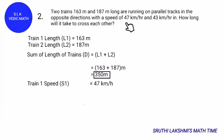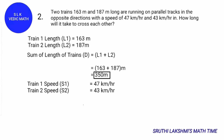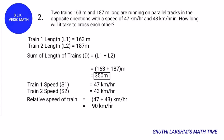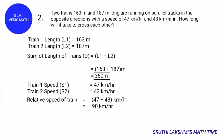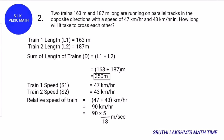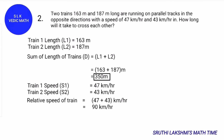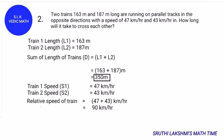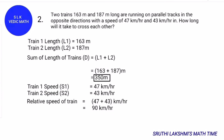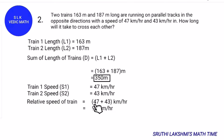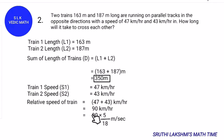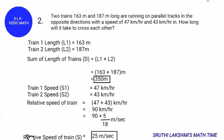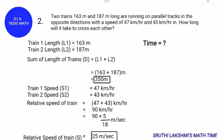The first train's speed is 47 km/h and the second train's speed is 43 km/h. To find the relative speed, we add 47 plus 43, which equals 90 km/h. We convert to m/s by doing 90 times 5/18, which gives us 25 m/s. So the relative speed is 25 m/s.